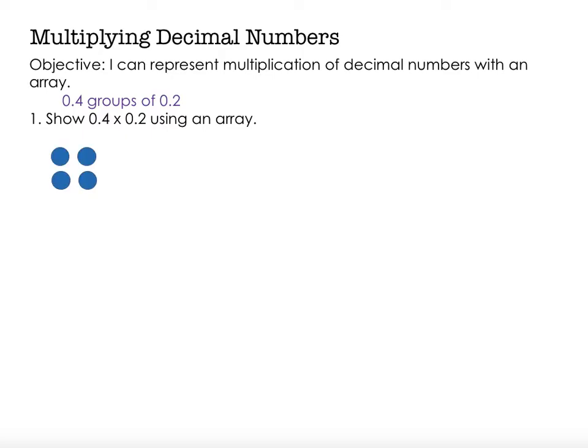So there's one group of two, two groups of two, three groups of two, and four groups of two. But that doesn't say four groups of two. That says four tenths groups of two tenths.